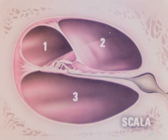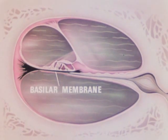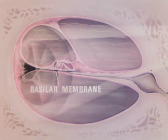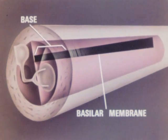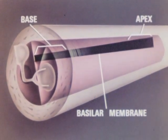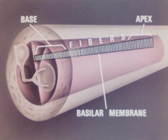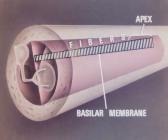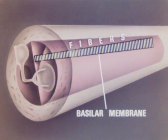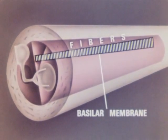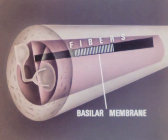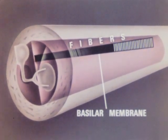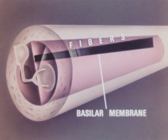Slicing the cochlea in half reveals a membranous tube within the bony tube, called the membranous cochlea. This tube is divided into three compartments called scala, which are filled with fluid. The very important basilar membrane forms the base of the middle compartment. If we could unroll the cochlea and its basilar membrane, we'd see that the basilar membrane is narrow at the base of the cochlea and broadens at the apex, or top. Lying on the basilar membrane is a series of fibers — shortest near the base and progressively longer toward the apex — an arrangement like the strings of a harp.